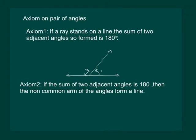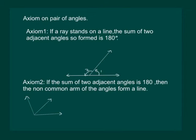Let us now check if the converse of axiom 1 is also true. We state converse of axiom 1 as axiom 2, which says that if the sum of two adjacent angles is 180 degrees, then the non-common arms of the angles form a line. To check if axiom 2 is true, let us draw one pair of adjacent angles. Here angle 1 and angle 2 are adjacent angles. Then OA and OB are the non-common arms.